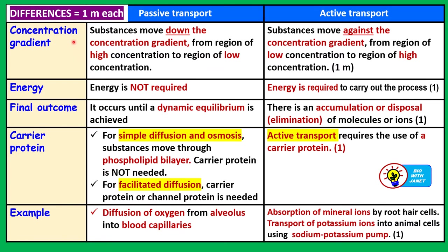Now let's look at the differences. From the aspect of the concentration gradient: in passive transport, substances move down the concentration gradient — from region of higher concentration to region of lower concentration. Whereas in active transport, substances move against the concentration gradient — from region of lower concentration to region of higher concentration, like cycling uphill — and it requires energy. Passive transport is like cycling downhill, where no energy is required.